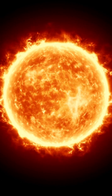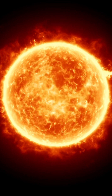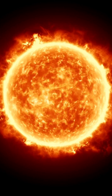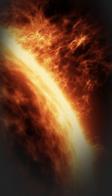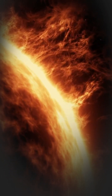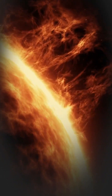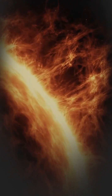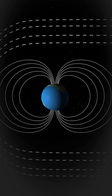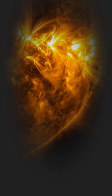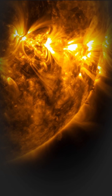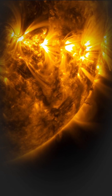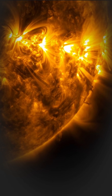Coronal holes are the primary sources of space weather disturbances, including aurorae. These solar winds escaping from the coronal hole can impact Earth's magnetosphere, leading to stunning displays of auroras at our planet's poles. The larger and more expansive coronal holes can often be a source for high solar wind speeds that buffet Earth for many days.